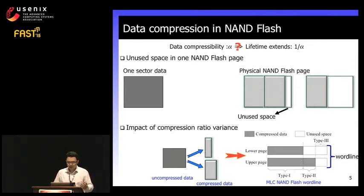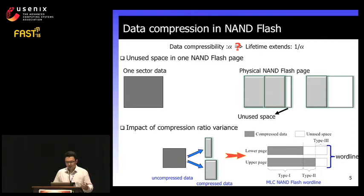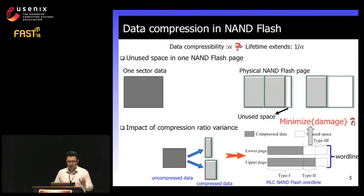Because of the deviation of compression ratio, the compressed data length is always different between the lower page and upper page in one wordline. As a result, the data layout divides one flash wordline into three types of regions. In type one regions, both bits belong to compressed data. In type two regions, one bit belongs to compressed data and the other to unused space. In type three regions, both bits belong to unused space. The question is: if the goal is to minimize damage for data compression storage, how should this unused space be handled? Is it enough to just leave this unused space unprogrammed?